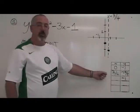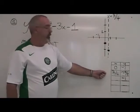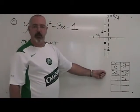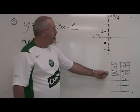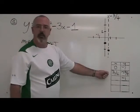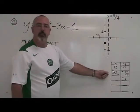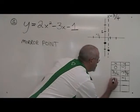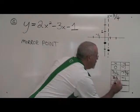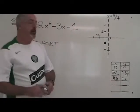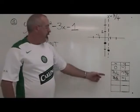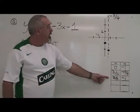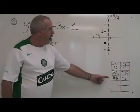The x-coordinate of the mirror point is double the x-coordinate of the vertex. Our vertex is 3 quarters, and 2 times 3 quarters is 3 halves, or 1 and a half. These are the coordinates of our mirror point, and I will graph them now.